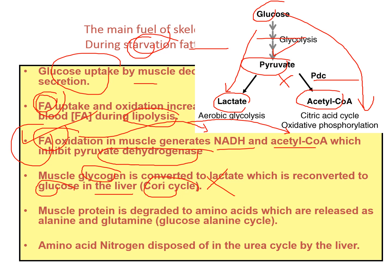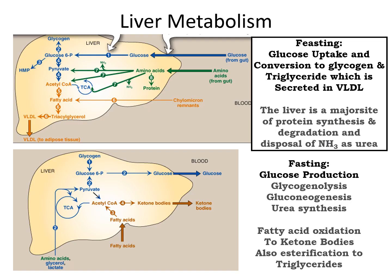During starvation, muscle protein is also broken down into amino acids — mainly alanine and glutamine — because we can use their carbon skeleton for energy production, while the amino group will be disposed of in the form of urea.